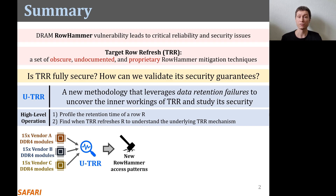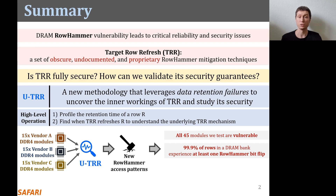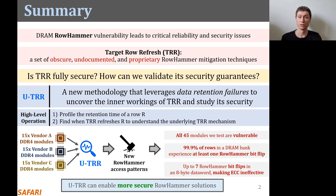Our results show that, first, all 45 modules we test across three vendors are vulnerable to our new RowHammer access patterns. Second, our access patterns cause at least one bit flip in almost all DRAM rows in many modules, making system-level RowHammer attacks easier to mount. Third, we observed that our access patterns cause up to seven RowHammer bit flips in an 8-byte data word, making ECC ineffective and systems equipped with ECC also susceptible to RowHammer attacks. We believe UTRR will facilitate future research by leading to the development of more secure RowHammer protection mechanisms.